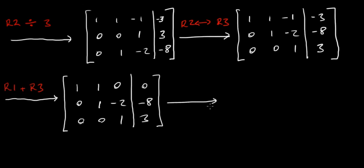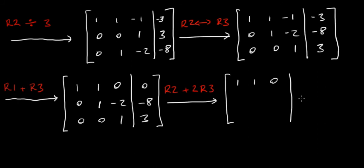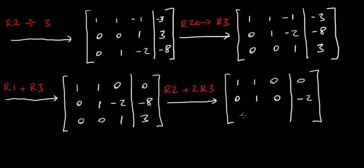Now I'm going to take row two and add twice row three. Row one doesn't change: 1, 1, 0, 0. For row two: 0 + 2×0 = 0; 1 + 2×0 = 1; minus 2 + 2×1 = 0; minus 8 + 2×3 = minus 8 + 6 = minus 2. Row three is unchanged: 0, 0, 1, 3. We're almost there.